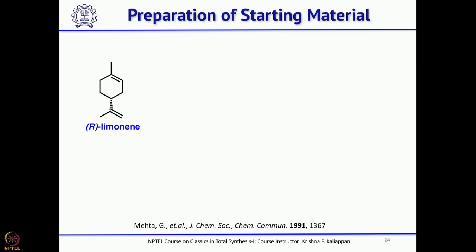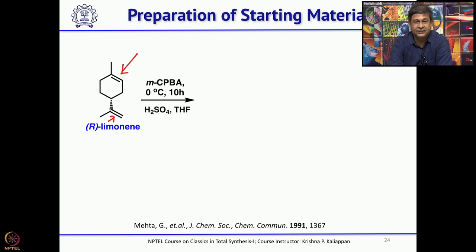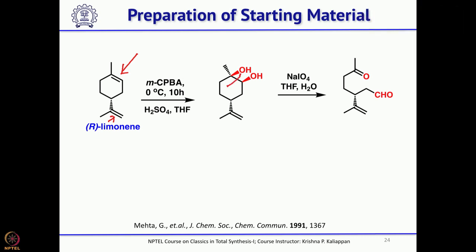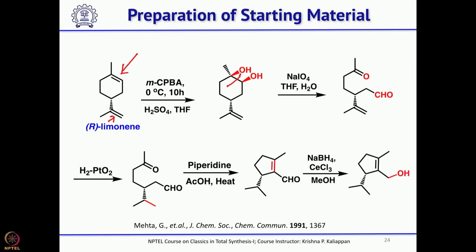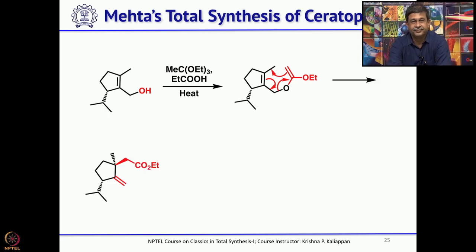He started with limonene. Selective epoxidation of the trisubstituted double bond — you have two double bonds, one trisubstituted and one 1,1-disubstituted — the trisubstituted double bond was epoxidized and opened with dilute sulfuric acid to get the corresponding diol. That was cleaved with sodium periodate to get the keto-aldehyde. Then the terminal double bond was reduced to get the isopropyl group, followed by intramolecular aldol reaction to give the five-membered ring with an aldehyde. Simple reduction of the aldehyde with sodium borohydride and cerium chloride — Luche reduction — gives the corresponding allylic alcohol. This allylic alcohol upon Johnson orthoester Claisen rearrangement gives the gamma,delta-unsaturated ester.